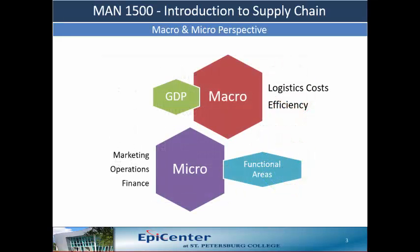To determine the efficiency of the logistics system, total logistics costs need to be measured in relationship to gross domestic product, or GDP, which is a widely accepted barometer used to gauge the rate of growth in the economy.